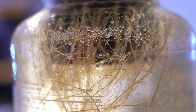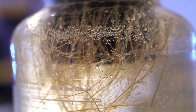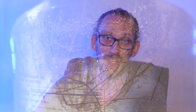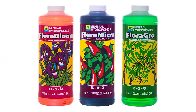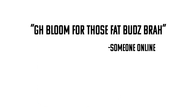The next nutrient-related acronym is GH. I notice this one a lot more on social media. GH stands for General Hydroponics, which is the largest supplier of hydroponic nutrients in the world. Their Flora Series is kind of universally used, so on social media you'll often see people say something like 'GH Bloom,' meaning the General Hydroponics bloom formula.